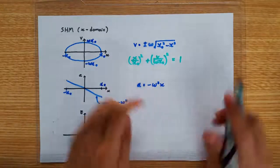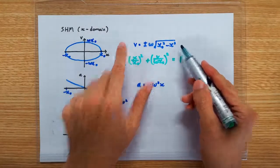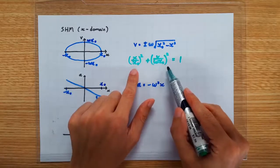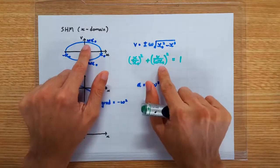So if you rearrange this equation, you are going to get this. And students who are very good at mathematics will instantly recognize this as the equation of an ellipse with intercepts at X0 and omega X0.